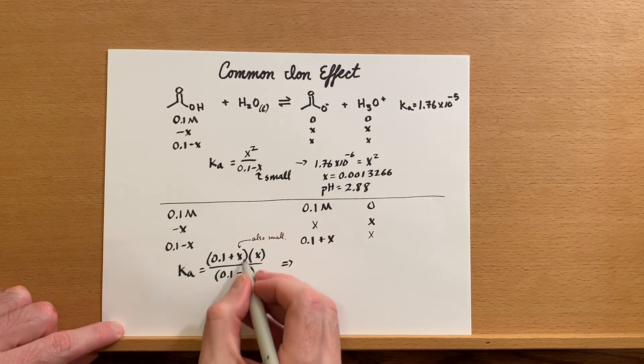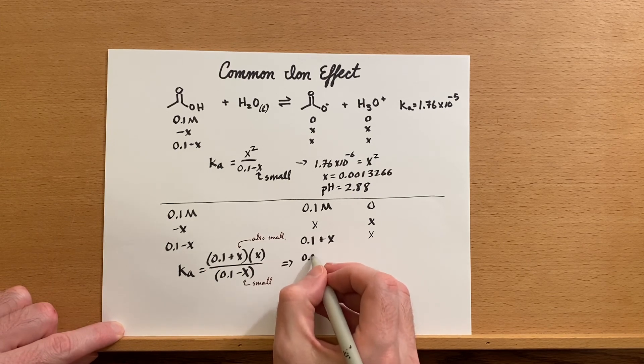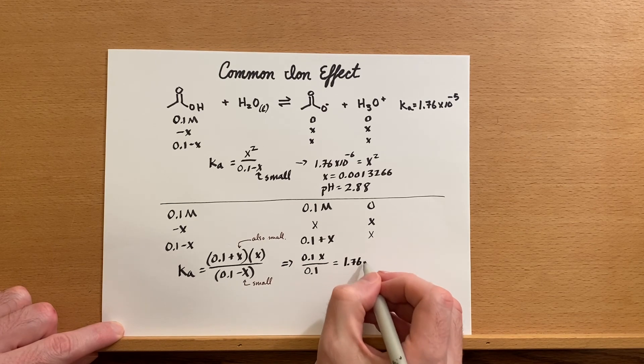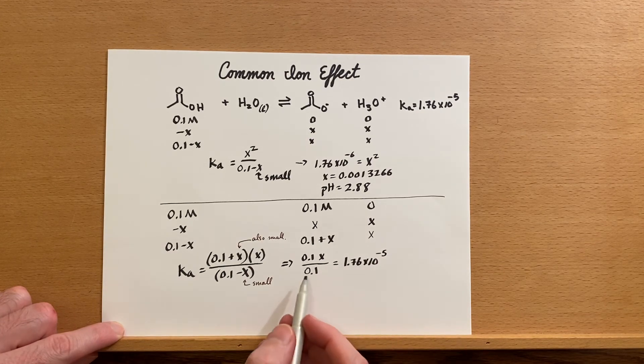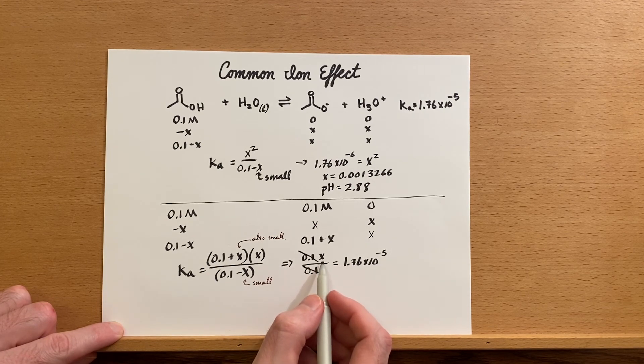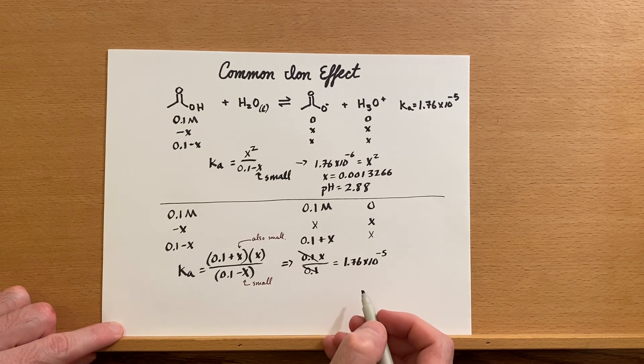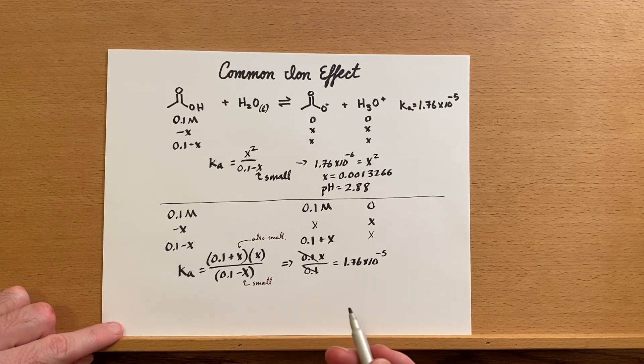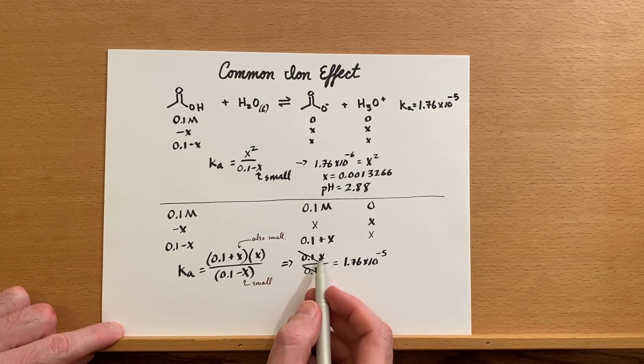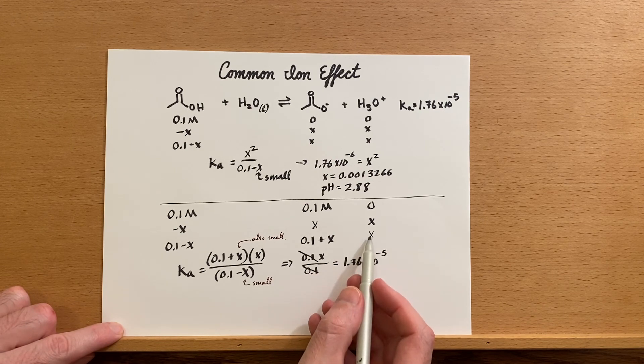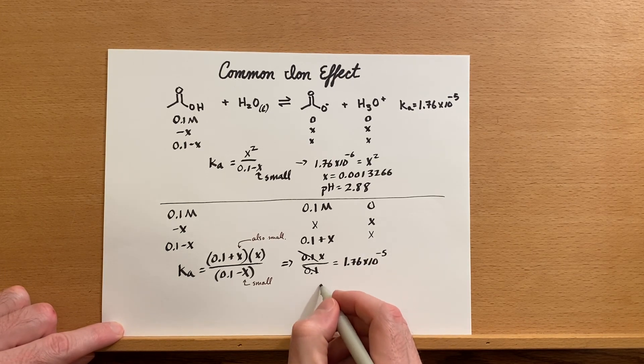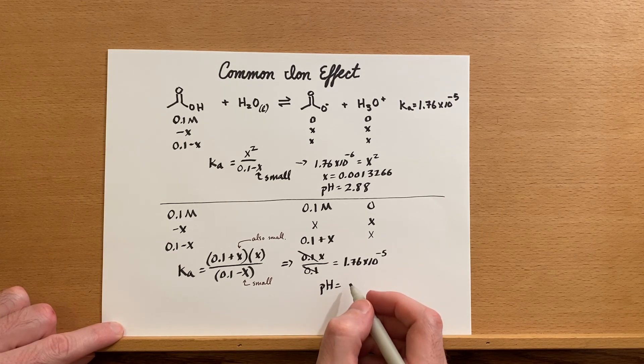We can just ignore the X's in right here. You'll notice that now our 0.1's will cancel and we'll just be left with X equals 1.76 times 10 to the minus 5, even simpler to calculate. Similar to above, X is our hydronium ion concentration, so if we want to know what the pH of this solution is we can simply take the negative log of this, and I got 4.75.